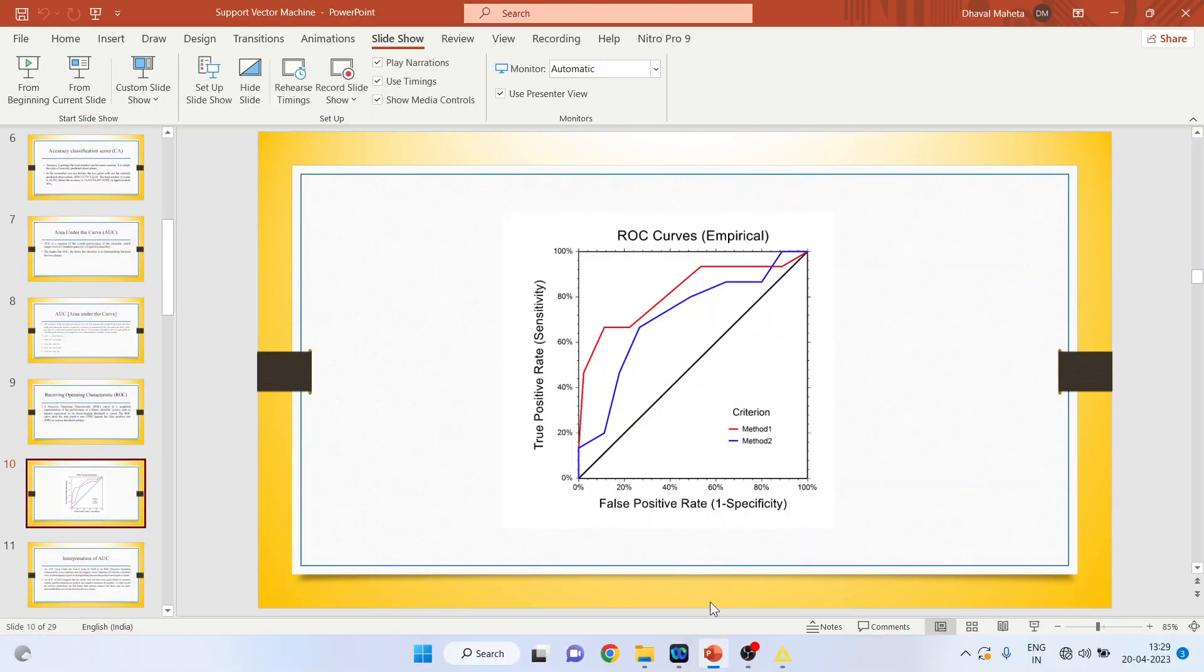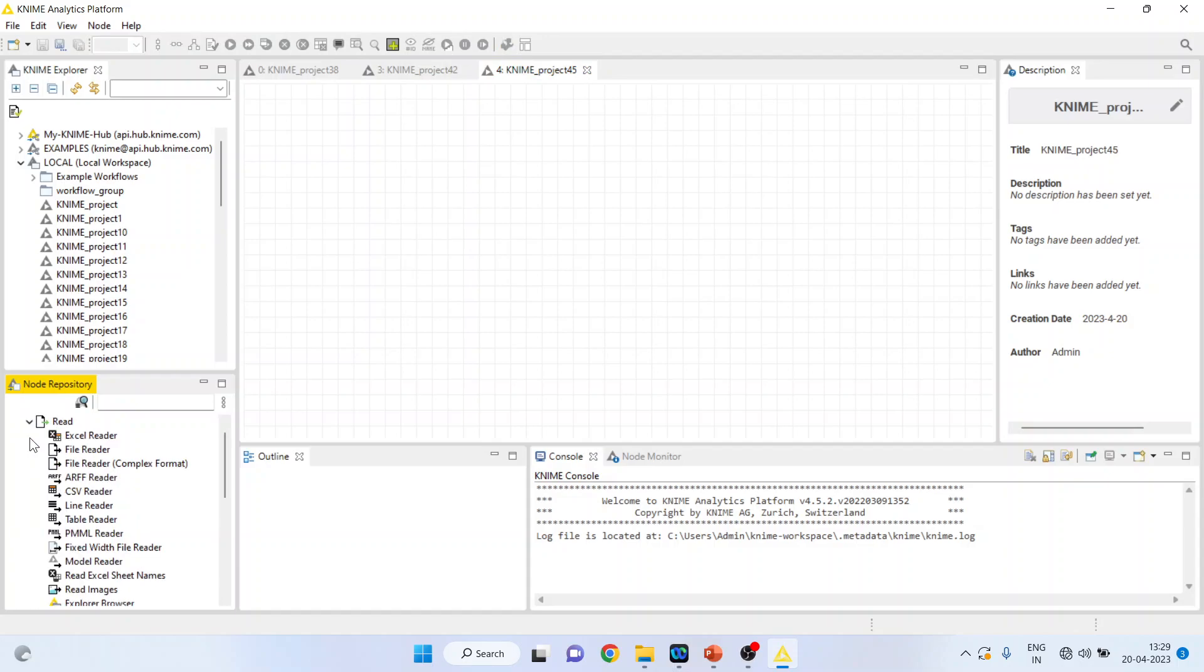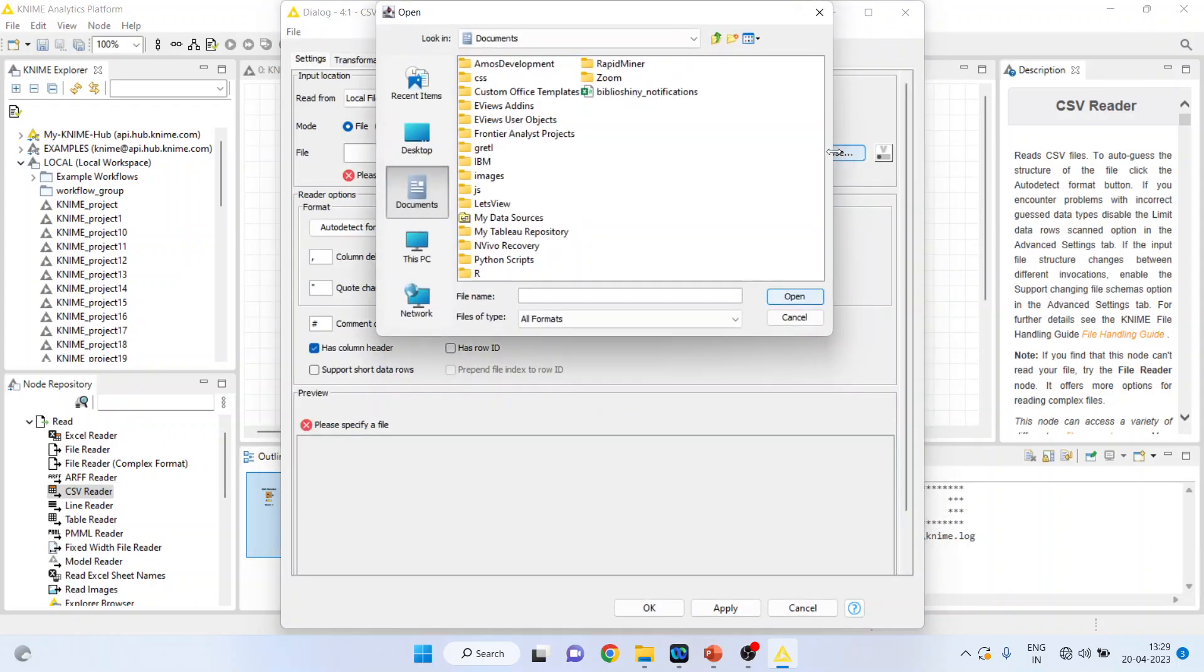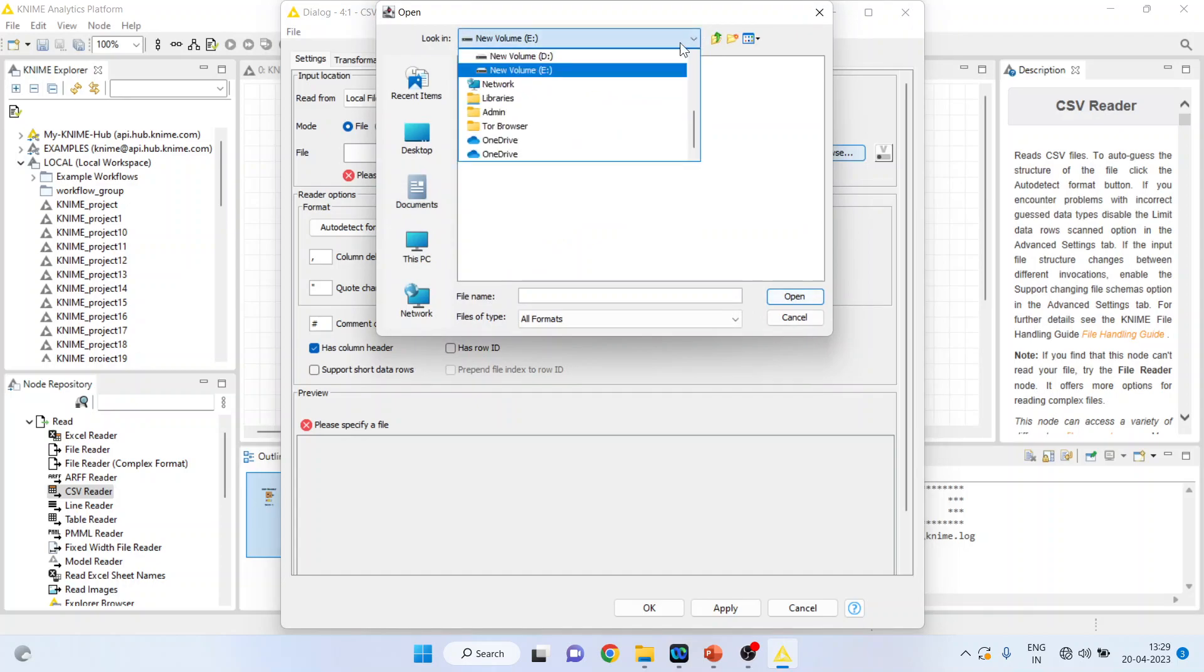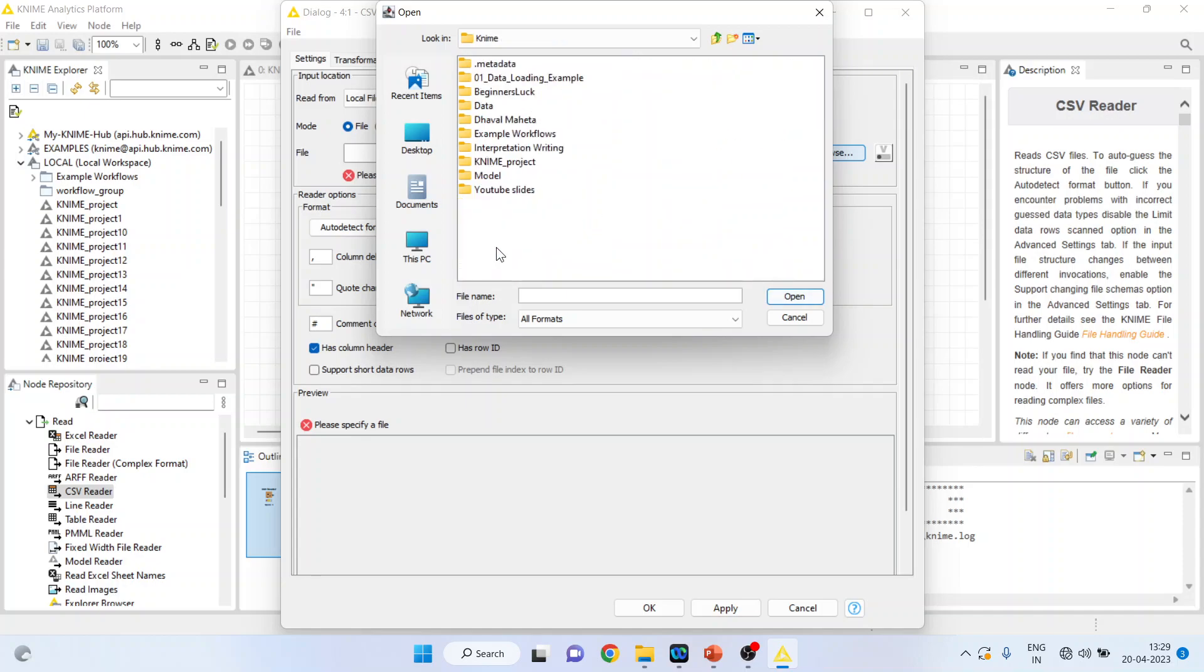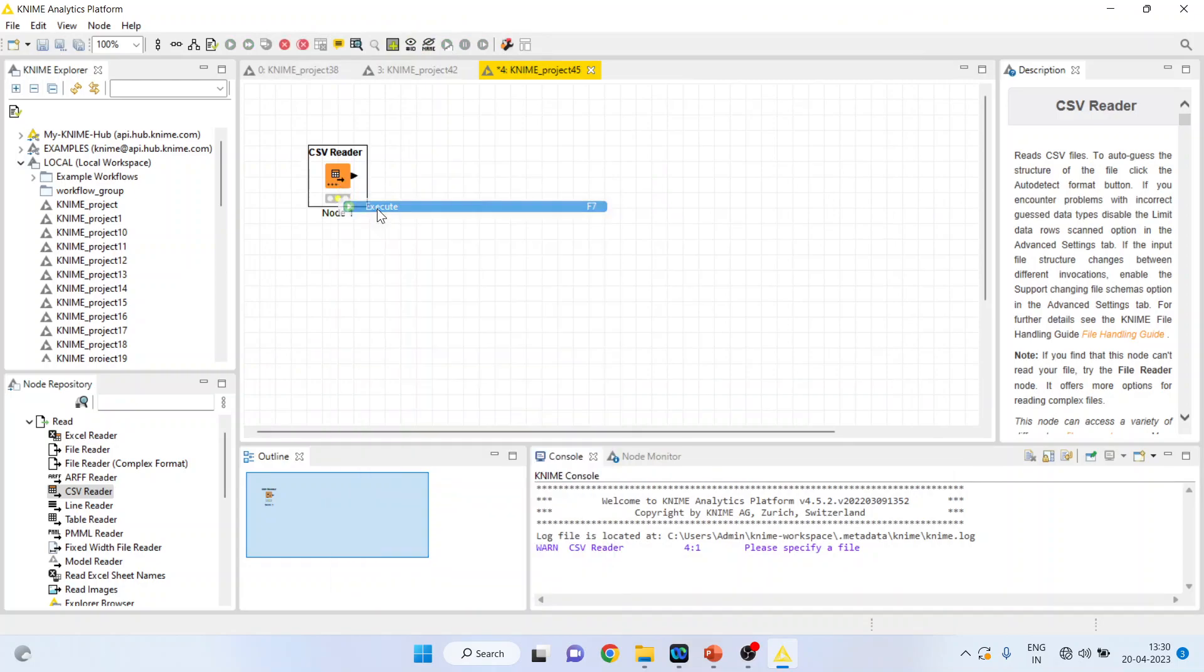Now let's see how we can draw the ROC in KNIME. First of all, I will activate input output from here, read CSV reader. Double click on it. I will load the data set, heart one. Open. Click OK. Right-click on it and execute.